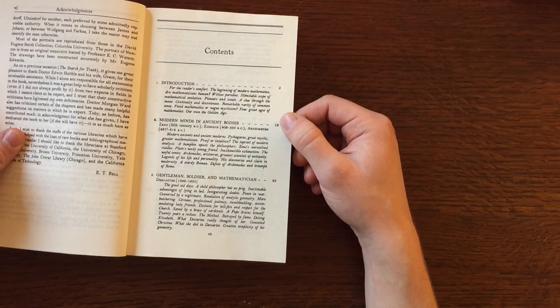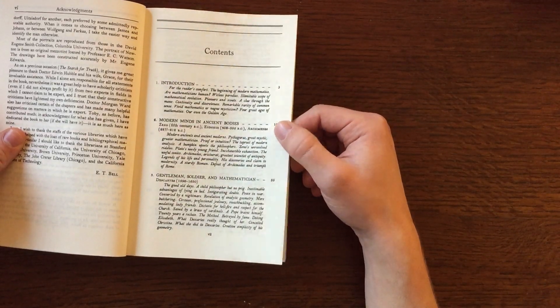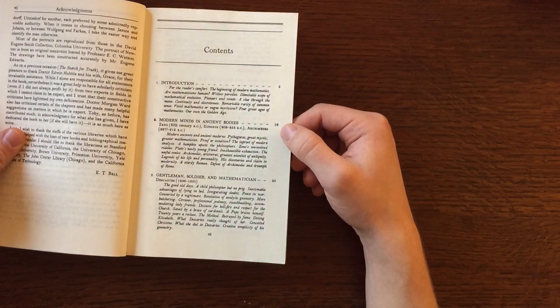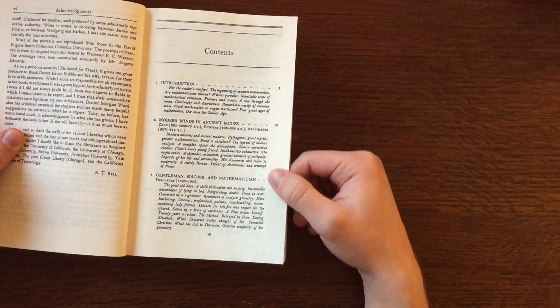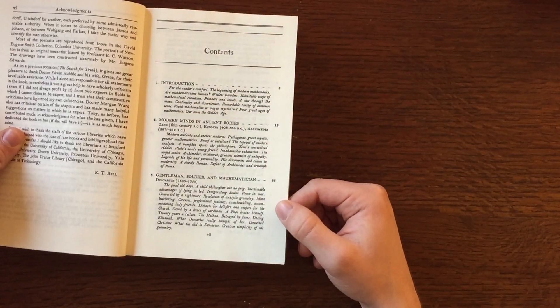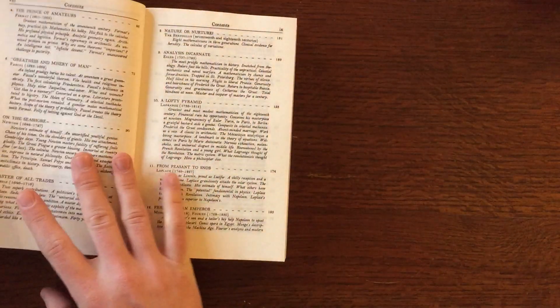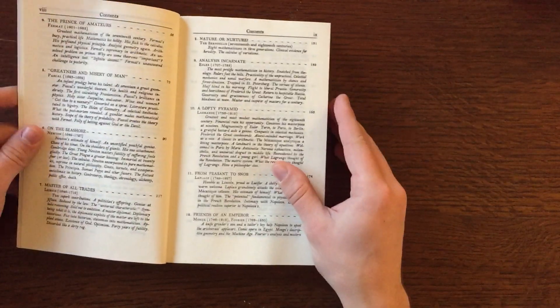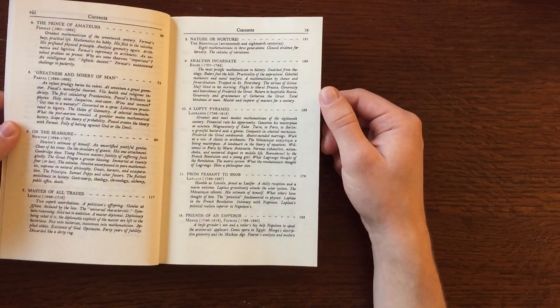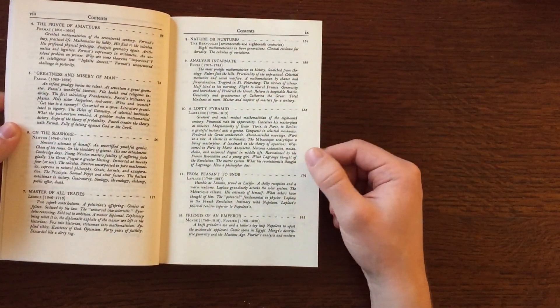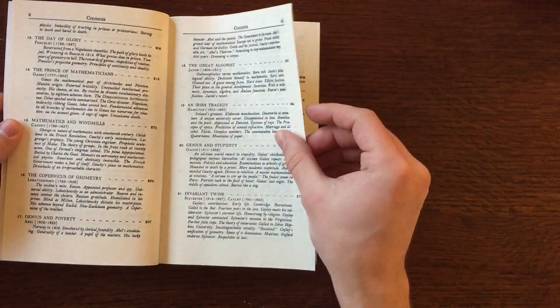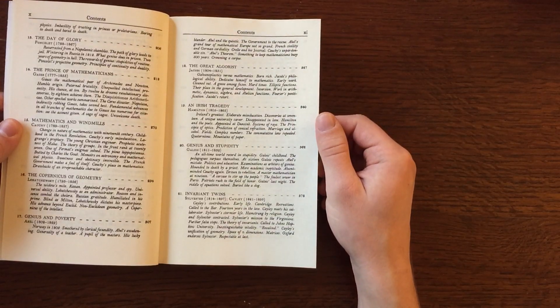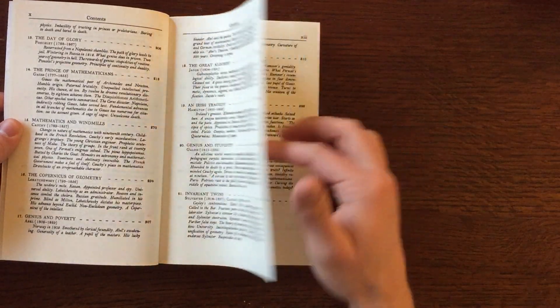It starts off by talking about Zeno, who's a really old mathematician, Archimedes, one of arguably the greatest mathematicians ever, and then moves up to more recent times, talking about Descartes, Fermat, Pascal, Newton, Leibniz, Laplace, Lagrange, Euler, the Bernoulli family, Gauss, Cauchy, Galois, and Jacobi.